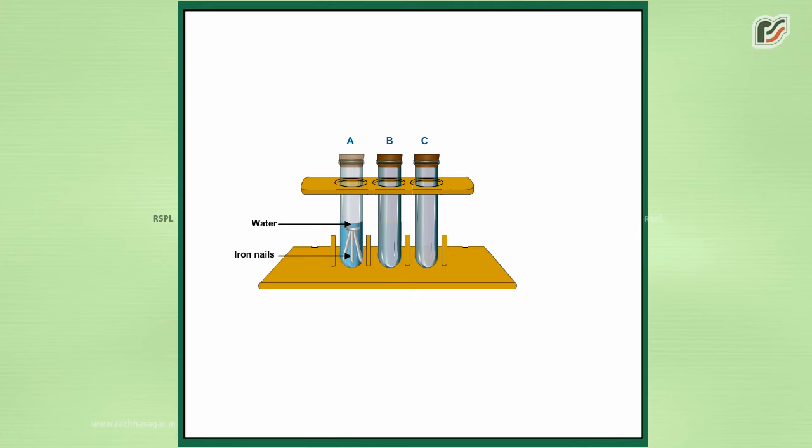Pour boiled distilled water in test tube B and put iron nails in it. Add one milliliter of oil over it so the oil floats and prevents air from entering. Put some anhydrous calcium chloride in test tube C.